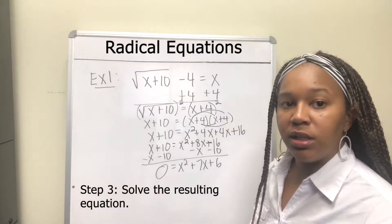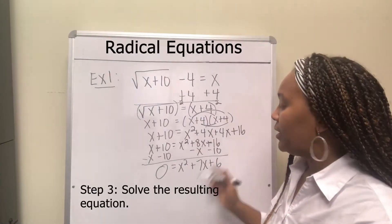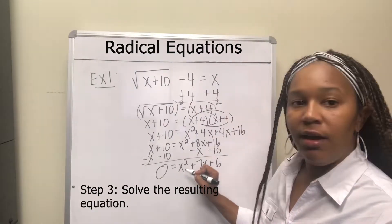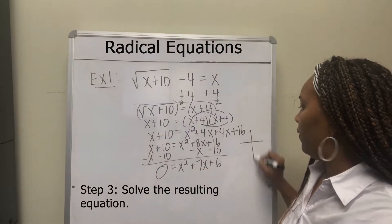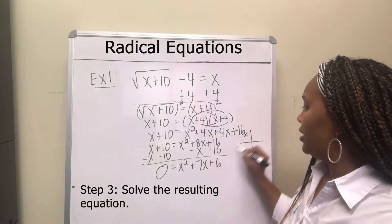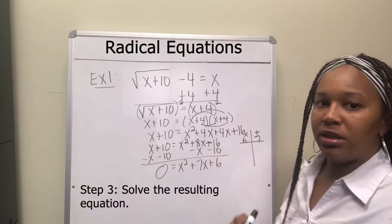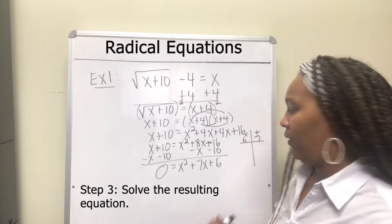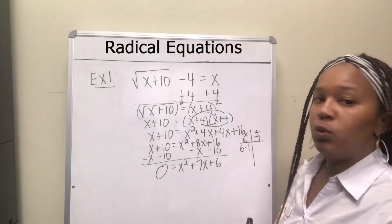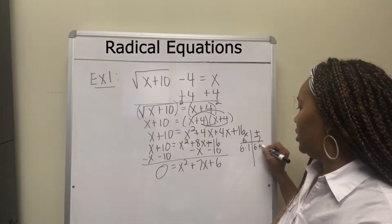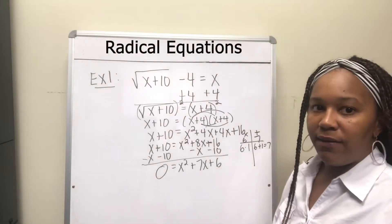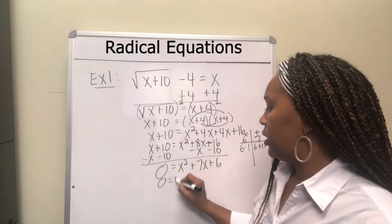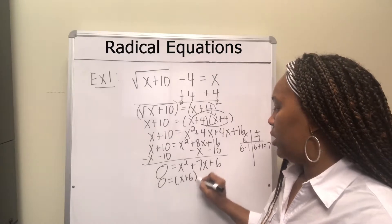This gives me x squared plus 7x plus 6 equals 0. I can factor this since the leading coefficient is 1. I want factors of 6 that add to 7. 6 times 1 is 6, and 6 plus 1 is 7, so the factors are 6 and 1. This factors into (x plus 6)(x plus 1).